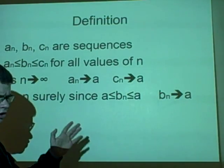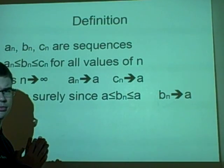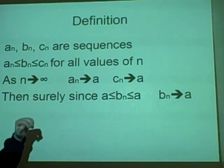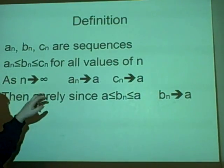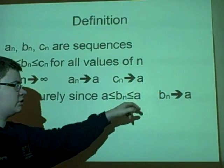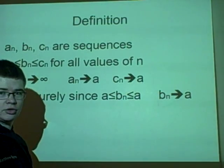Now it's called the Sandwich Theorem because you trap it, like you trap the inside of a sandwich between bread. So if this is true, then this means that a is less than or equal to bn is less than or equal to a, so bn obviously goes to a.